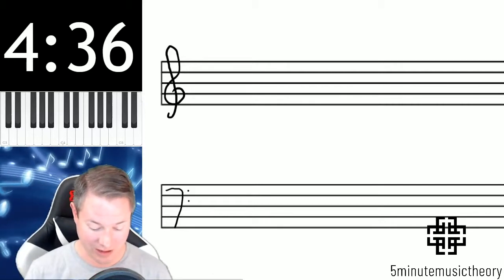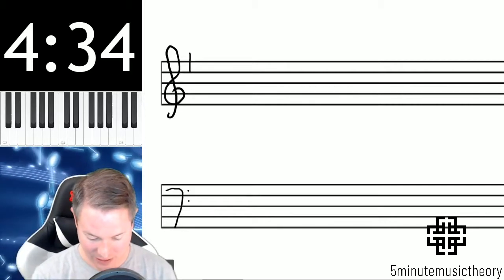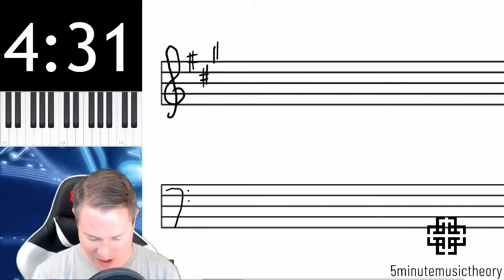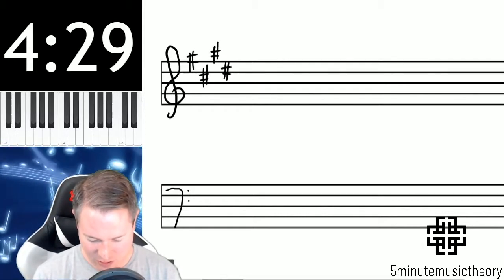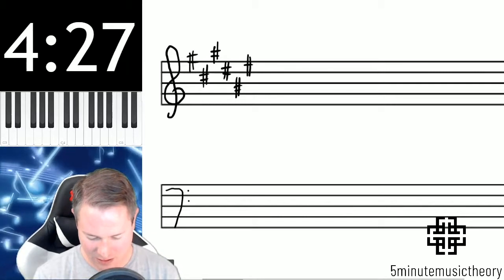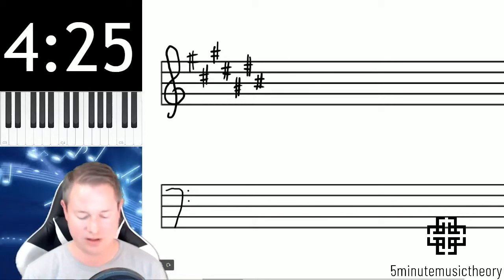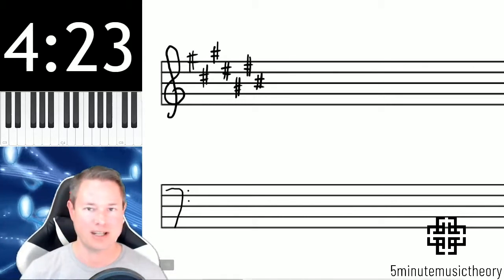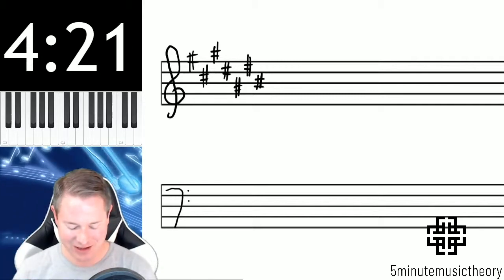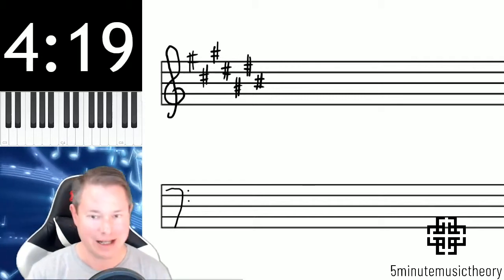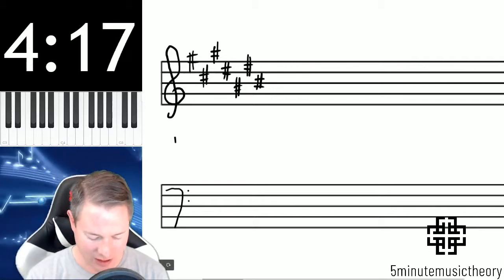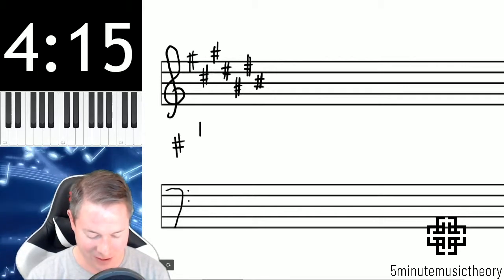So now let's get into the trick with that little public service announcement under our belts. I'm going to write a key signature with a whole bunch of sharps, in fact all seven of them, starting with treble clef. That looks like a mess, so how are we going to figure out that key signature without having it memorized? Again, memorize them. It's going to be for your benefit to do that.